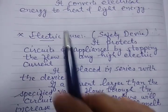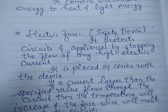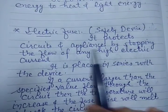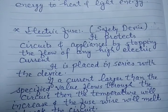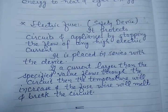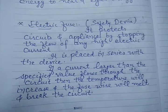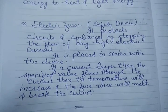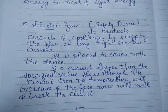Next application is electrical fuse. This is also known as a safety device. Why? Because it protects the circuits and appliances by stopping the flow of any high electrical current. It is always placed in series with the device. So if a current larger than the specified value flows through the circuit, then the temperature will increase and the fuse will melt, and automatically the circuit will break. So the current will not flow.